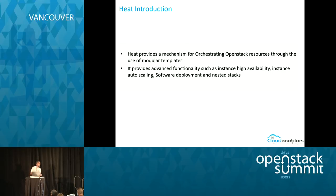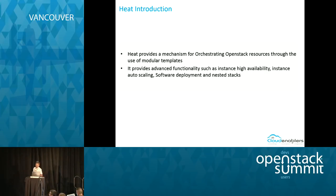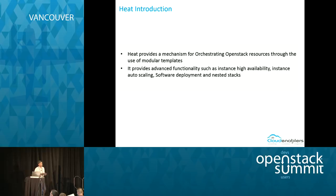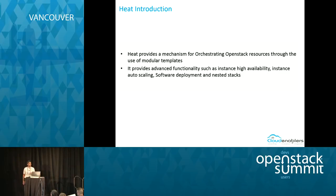How many of you have hands-on experience with HEAT? Quite a few. So I will run through the introduction. HEAT provides a mechanism to orchestrate OpenStack resources through a template-driven model. HEAT supports different templating models — it supports CFN and HOT. HOT is the Heat Orchestration Template, OpenStack's native DSL.